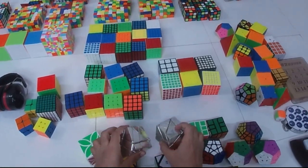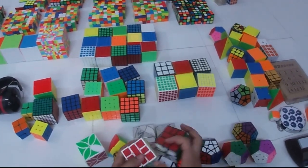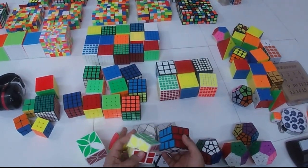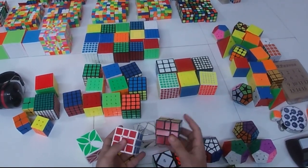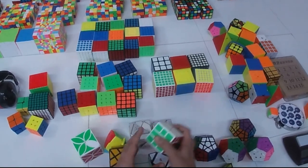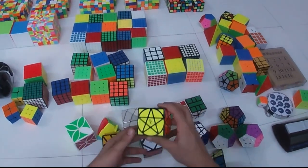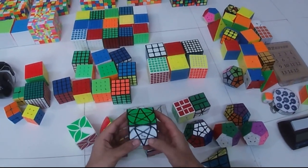Here are two very old mega square ones. One is the MoYu square one, very old one, and here's the QiYi square one. Here is a pentacle cube that I won as a prize, it's a fun puzzle to solve.